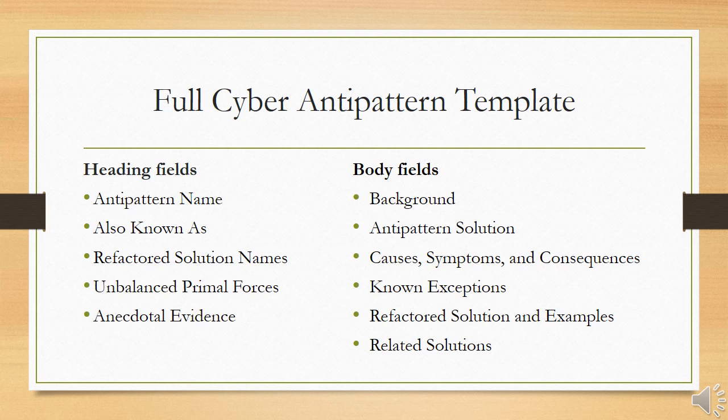The body fields in the full cyber anti-pattern template include: background, an optional field providing contextual explanations not central to the anti-pattern and its refactored solution. Anti-pattern solution: this field defines the anti-pattern solution through diagrams, explanations, examples and discussions of design forces. The anti-pattern solution is a commonly occurring situation or configuration with significant security implications such as risks, threats and vulnerabilities.